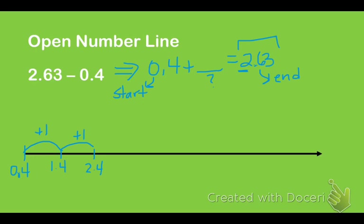What else do I have to add to get from 2.4 to 2.63? I don't have to add any more whole numbers, so now let's look at the tenths place. In this tenths place I have a 4, and in this tenths place I have a 6. So I want to jump at least two more tenths to get from 2.4 to 2.6. So I'm going to go plus 0.1, which gets me to 2.5. And then I'm going to add another 0.1 to get me to 2.6. But I'm not done yet because I'm only at 2.6 and I need to get to 2.63.